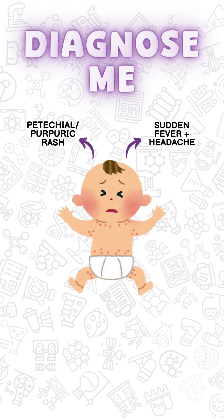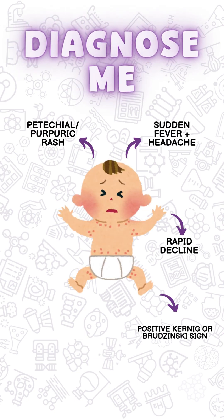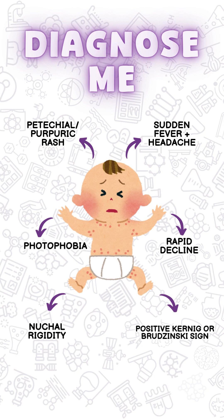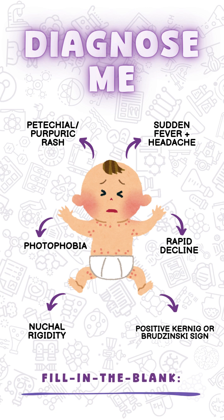Let's diagnose this little one. This patient presents with petechial or purpuric rash, photophobia, nuchal rigidity — which is that rigidness in the neck — sudden fever, headache, rapid decline, and positive Kernig or Brudzinski sign, which is knee to chest and/or chin to chest.